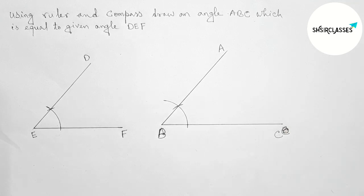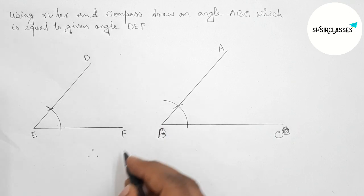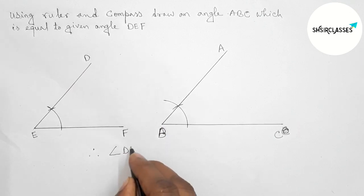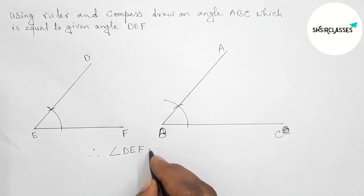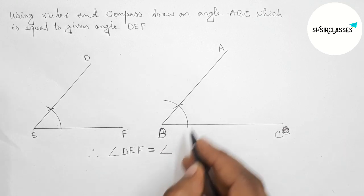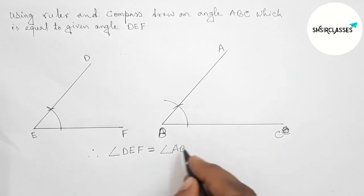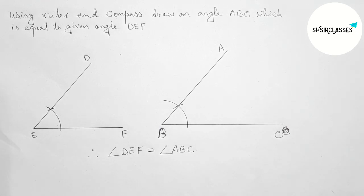So now angle DEF and angle ABC both are equal. So therefore angle DEF equals angle ABC. So that's all, thanks for watching.